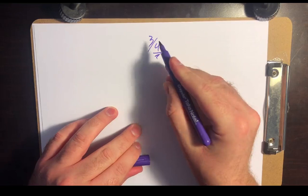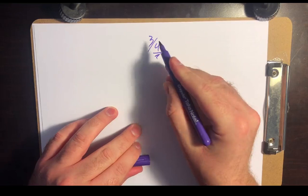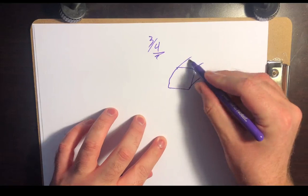And so that's really where, in Kleiber's Law, the four comes from, okay? There's the three dimensions that a cell occupies. And then there's that extra added fourth dimension from the space-filling nature of the cardiovascular system.